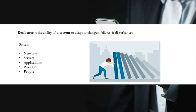Chaos testing tests the resiliency of the system. Resiliency is the ability of a system to adapt to changes, failures, and disturbances. We know there are a lot of issues in networks, servers, applications, and with people as well. If our system is more resilient, the application will remain up or can come back up again after failures.